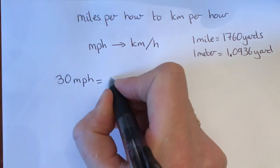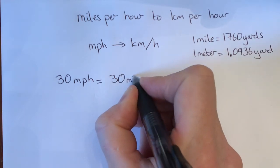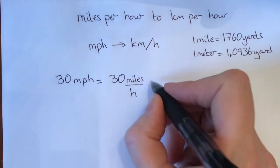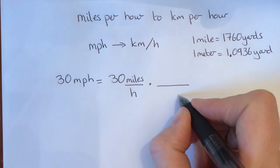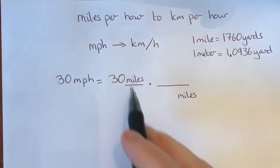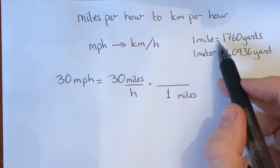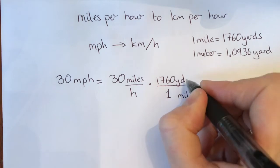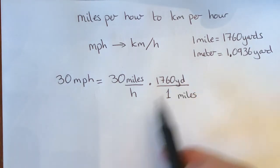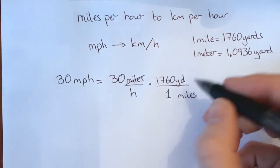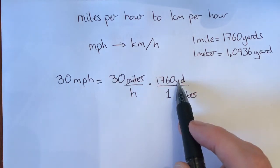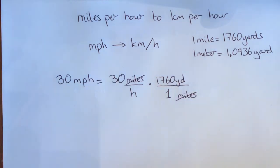Let's start with what that means: 30 miles per hour. The first thing we'd like to get rid of is miles, so we need to divide by miles. We know that one mile is the same as 1760 yards — I'll abbreviate yards as YD. Now we've got miles divided by miles, so now we've got 30 miles per hour in terms of yards per hour. But we don't want it in yards per hour; we want it in terms of kilometers.